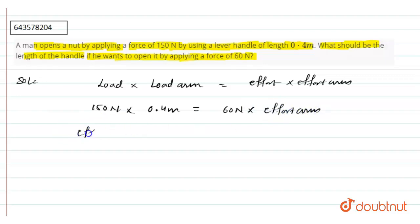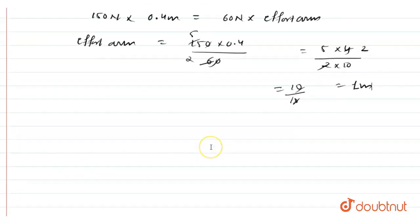So our effort arm comes to be 150 into 0.4 divided by 60. By cancelling zeros and by cutting with 3, we will get 15 upon 2, and this can be written as 5 into 4 divided by 2 into 10. By cancelling, 0.4 will get 10 upon 10, which comes out to be 1 meter. So our effort arm will be 1 meter.